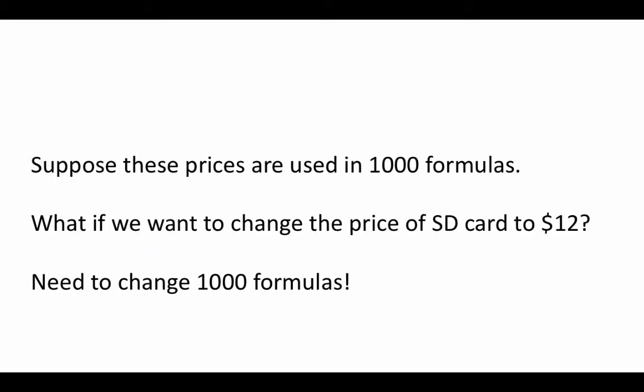So again, we are saying, suppose these prices are used in 1000 formulas, if you want to change the price of an SD card to 12, so now we have the problem of changing 1000 formulas. You may say, well, I am only going to change one formula and then I am simply going to copy it to all the others. But then there is always a risk associated with that, that you may not copy the new formula to all of the 1000. What if you miss out one? What if you miss out 10? Because all of the 1000 are not visible on one page. They are in several pages and it is very easily possible that you may miss out something.